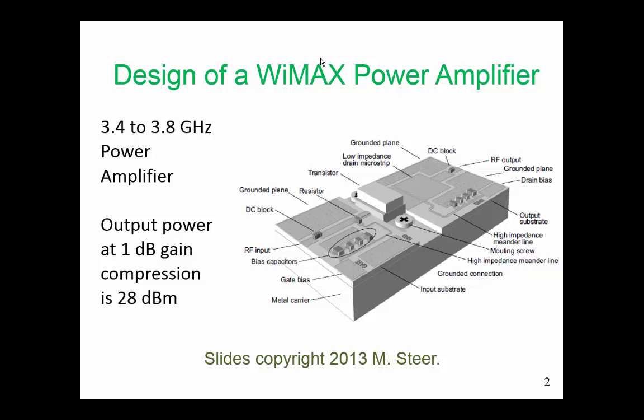In this case study, we're going to look at the design of a high-power amplifier. This amplifier is designed for WiMAX, and there are transistors available from vendors that are particularly optimized for WiMAX applications. WiMAX is 3.4 to 3.8 GHz, and the output power in this design at 1 dB gain compression needs to be 28 dBm. That image there is the final design and layout of the WiMAX amplifier, and we're going to go through the stages that lead to that design.